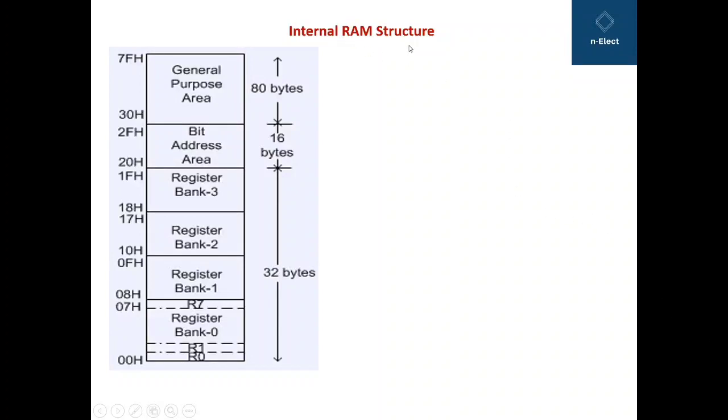Moving on to the internal RAM structure, we have already seen the RAM, internal RAM, 128-byte RAM in the previous videos. Here, we have shown it diagrammatically and we have distributed the entire 128-byte RAM into three blocks mainly. Which are the three blocks? The register bank is one block, second block is bit addressable area and third block is general purpose area.